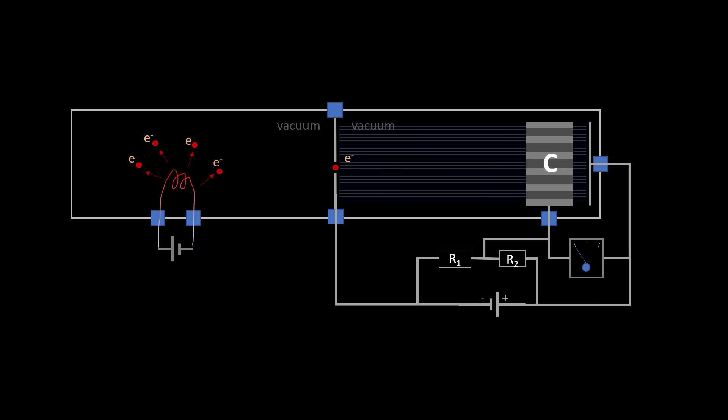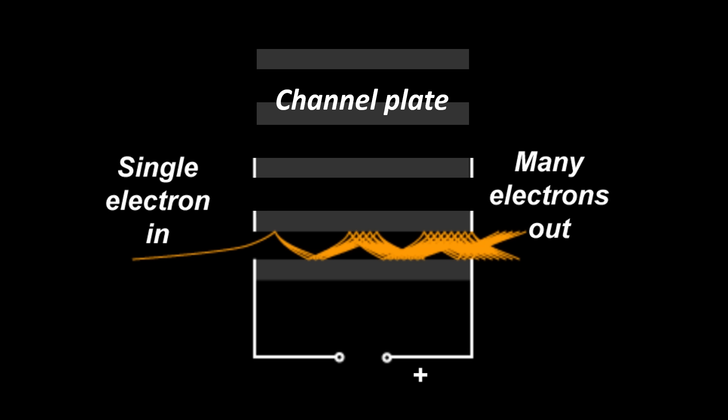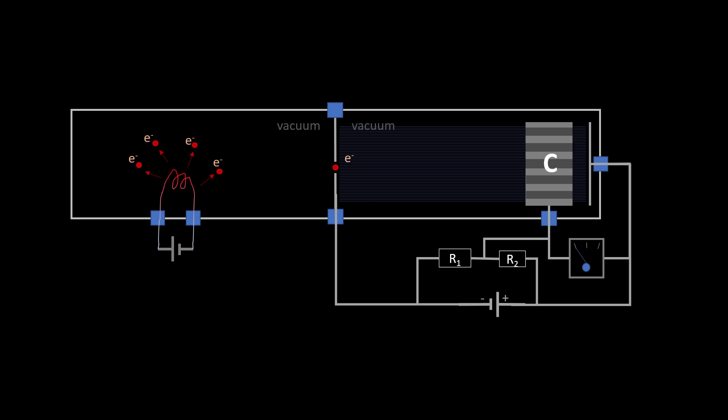But if we were to add a device called a channel plate, we might be able to detect a single electron near this hole. Because this one electron can result in an avalanche of electrons in the channel plate, say a million or so.